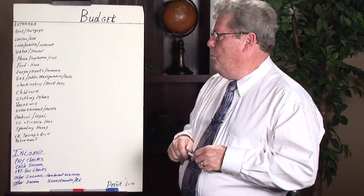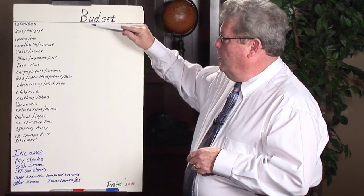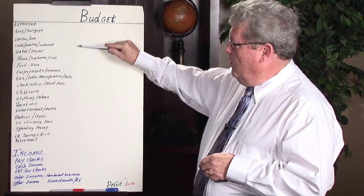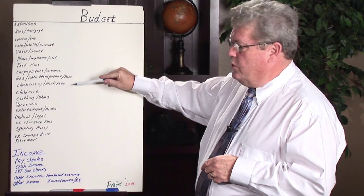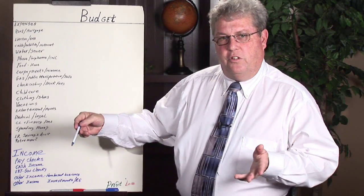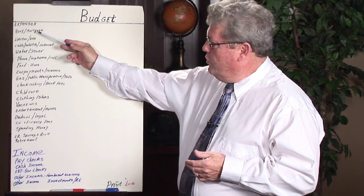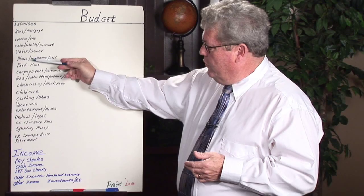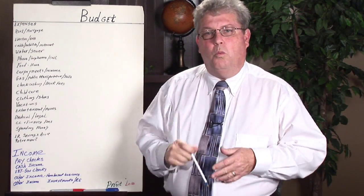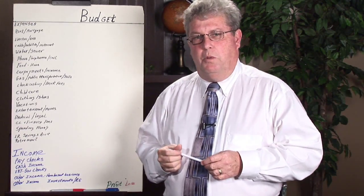Under a traditional budget, you would simply write down all the expenses you have — for instance, your mortgage, your rent, your electric, your phone. Where are you spending your money?